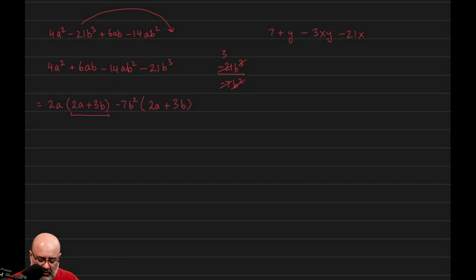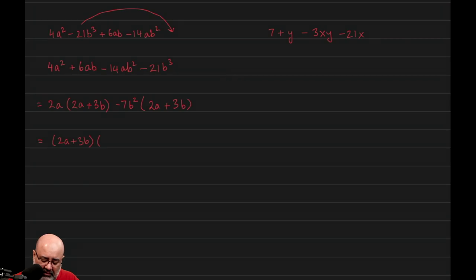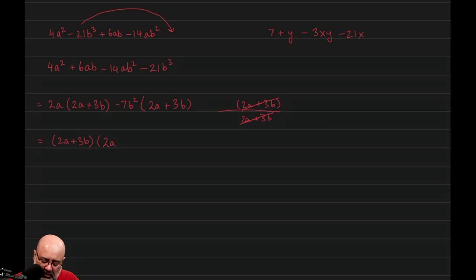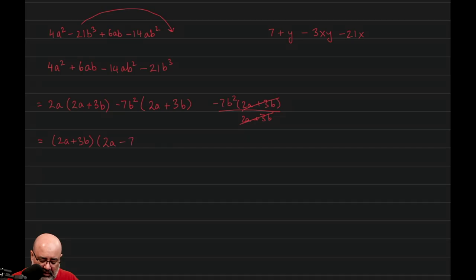Lo and behold, these two groups match so we can continue with grouping. We factor out the GCF of the two big terms, which is 2a plus 3b. We open parentheses immediately after writing the GCF, then divide each term by it. 2a times (2a + 3b) over (2a + 3b) leaves 2a. And negative 7b² times (2a + 3b) over (2a + 3b) leaves negative 7b². So that would be our answer.